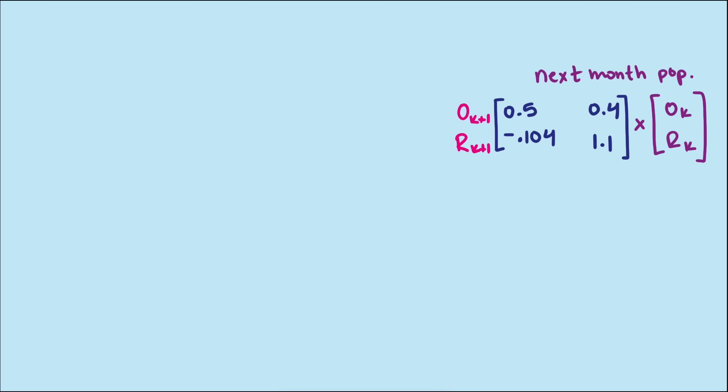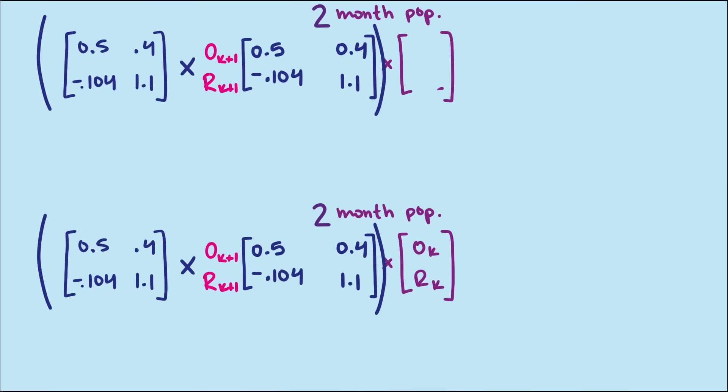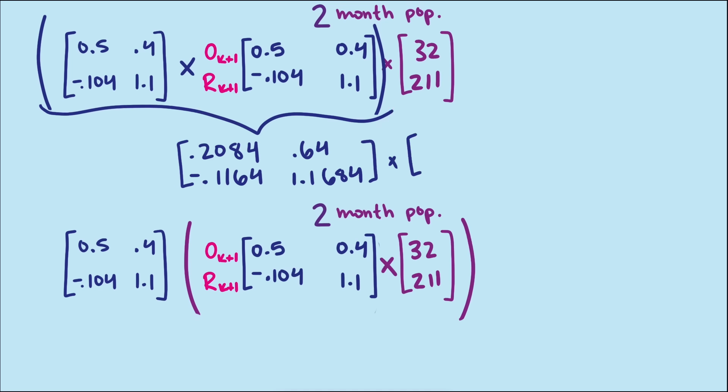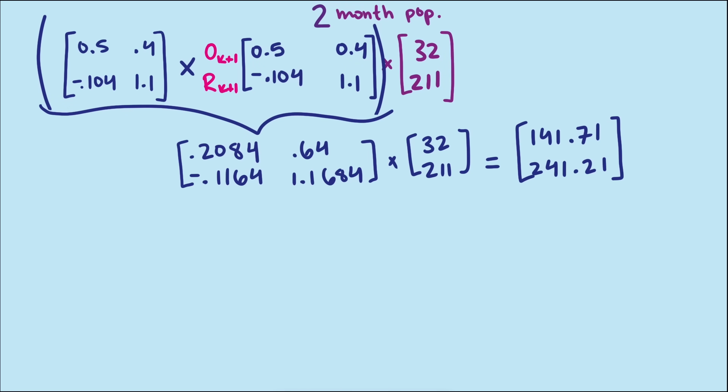If we wanted to know what the population is two months down the road, we multiply by our matrix again. But we should be able to predict the population two months down the road with one vector. Instead of multiplying it as vector times a matrix, and then times the matrix, we should be able to multiply it this way: multiplying the two matrices together, and then multiply that by the vector, and we should get the same answer. We could even write it as the matrix squared times the vector. The way we've defined matrix multiplication gives us the same answer no matter which order we do the multiplication, so our definition of matrix multiplication gives it the associative property. But the way we define matrix multiplication also gives us the same result of the two months matrix whether we square this matrix or create the two months matrix from scratch. This is another strong reason to define matrix multiplication the way that we have.